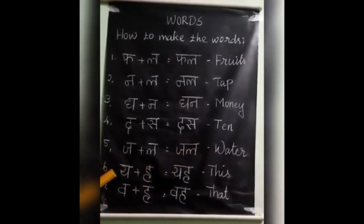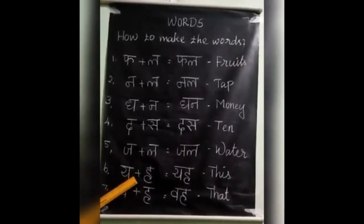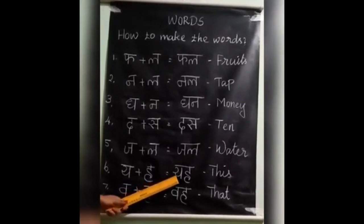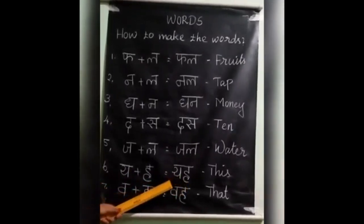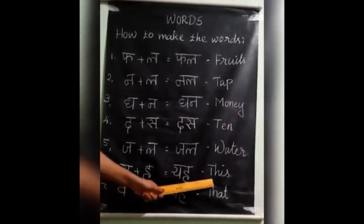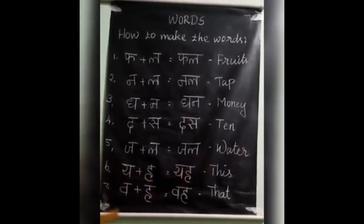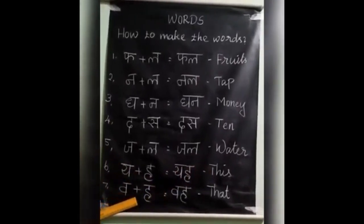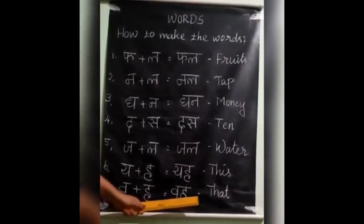Shall we go to the next one? Ok children. Ya plus ha is equal to yakh. Yakh means this. Va plus ha is equal to vah. Vah means that.